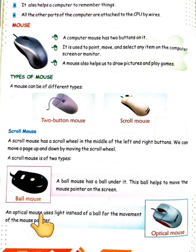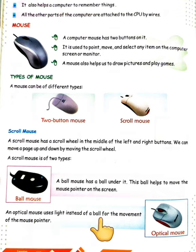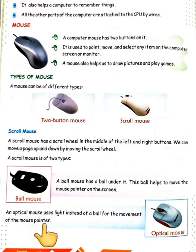The next type is the optical mouse. An optical mouse uses light instead of a ball for the movement of the mouse pointer. Just as a ball mouse uses a ball to move the pointer, an optical mouse uses light for the same purpose.